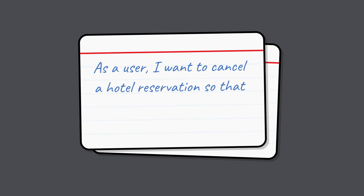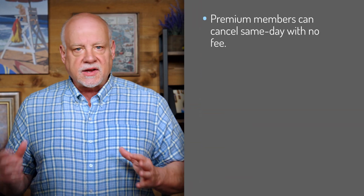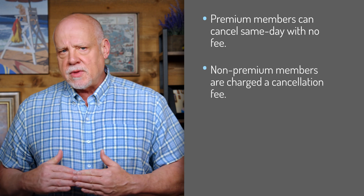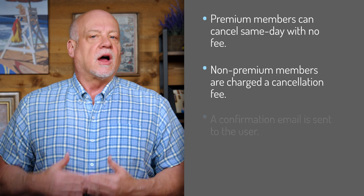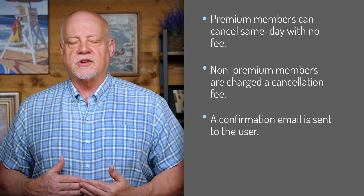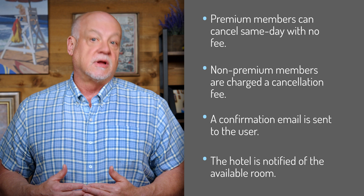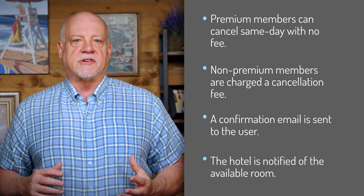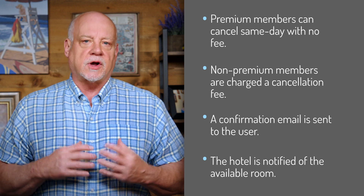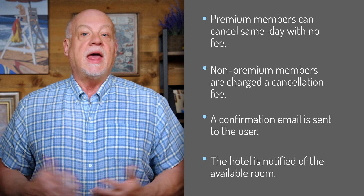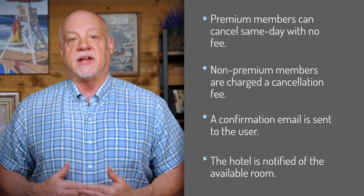Let's look at an example. Here's the story: As a user, I want to cancel a hotel reservation so that I'm not locked in if my plans change. Pretty simple, right? We add the acceptance criteria and things get more clear. For this story, I'll add that premium members can cancel the same day with no fee, non-premium members are charged a cancellation fee, a confirmation email is sent to the user, and the hotel is notified of a cancellation. Now we're talking. The story, with its acceptance criteria, paints a much more complete picture of how the feature should work, and gives the team something concrete to build and test against.